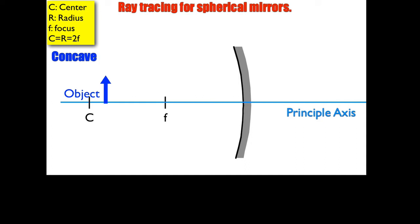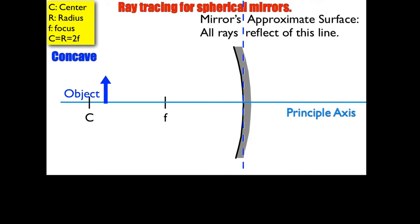To draw this image, what we're going to do is use an approximation — that the curvature is really large. So we're going to draw a straight line, represented here as a dotted blue line, at the vertex, which is the point where the mirror touches the principal axis. The distance between the object and the mirror we're going to call S, which we'll use as a variable when we do the math later on.